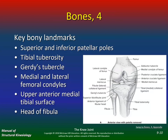What are some key bony landmarks? Superior and inferior patella poles, the tibial tuberosity, Gerdy's tubercle right in here, mediolateral femoral condyles, upper and anterior medial tibial surface, and the head of the fibula. You can easily palpate all these bony landmarks. If you look at your tibial tuberosity, you may have a bump — boys get this a lot if their bones grow faster than their soft tissues during a sudden growth spurt in eighth or ninth grade. It's called Osgood-Schlatter's disease. It's not really a disease, but you get this little bump, and during that time it's very painful to run or jump. They usually grow out of it by 18.